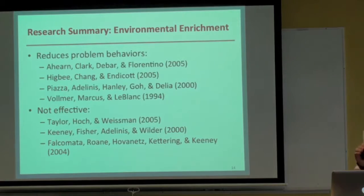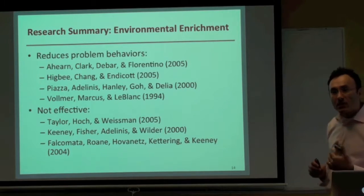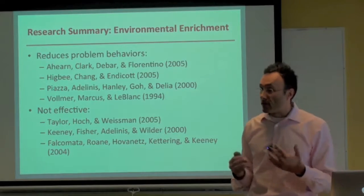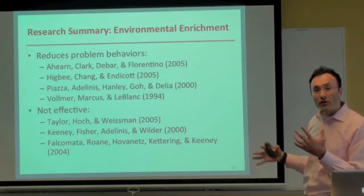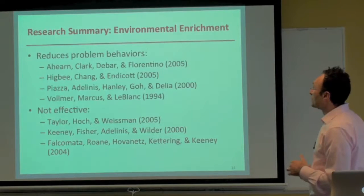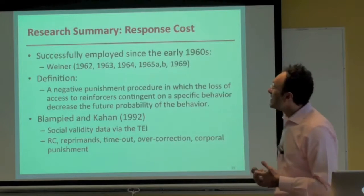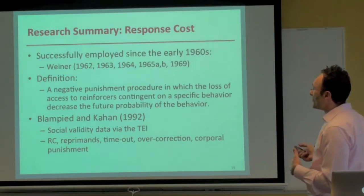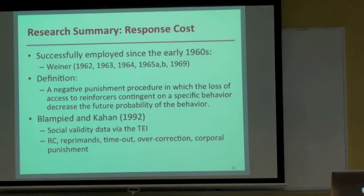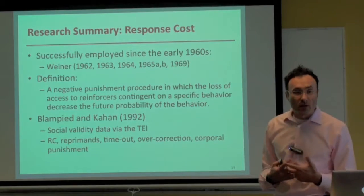Two key articles in the field are one by Keeney and colleagues from 2000, and a replication by Falcomata and colleagues in 2004. First, I want to talk about response cost — a negative punishment procedure defined as the loss of access to reinforcers contingent on a specific behavior, which reduces the future probability of that behavior. A person has something they like, we remove it for a short period — 30 seconds or a minute — and thereafter represent it.